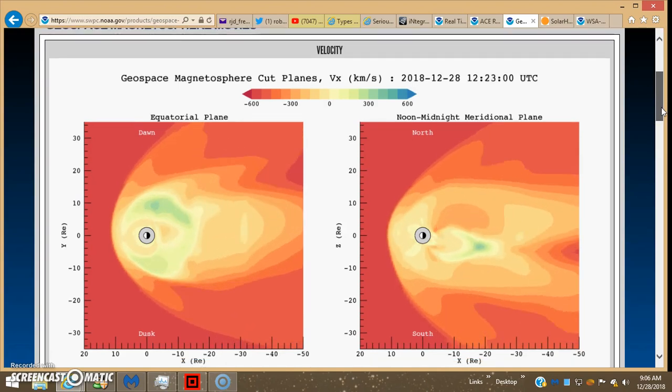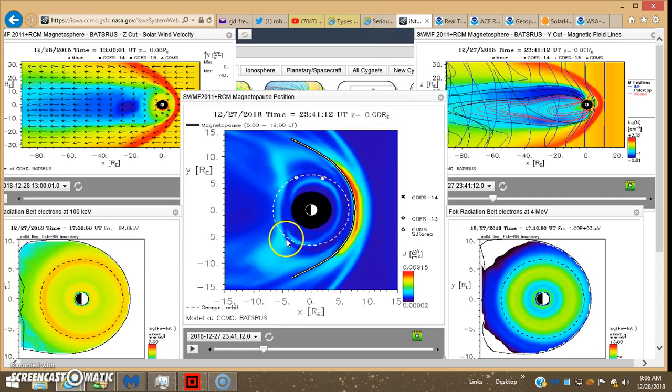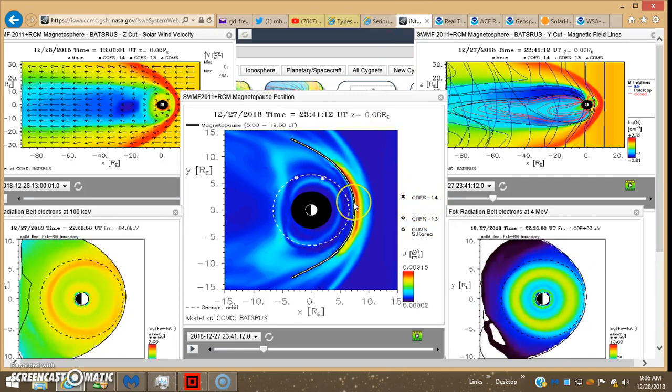This is all your stuff coming from ISWA simulations from the satellites around the earth in geosynchronous orbit, the GOES 13 and 14 and I think the 15 as well.